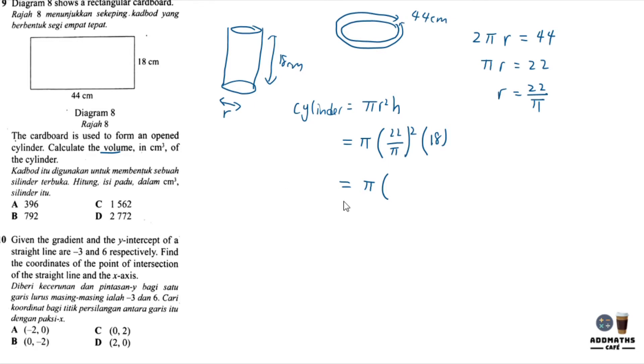So π times r, which is 22 over π, squared, times height 18. In this case, 22 squared gives 484, and the π down here will be squared times 18. So π and π cancel. You get 484 over π times 18. So 484 times 18 divided by π gives the answer of 2773.12. The closest value is D, so the answer is 2772.